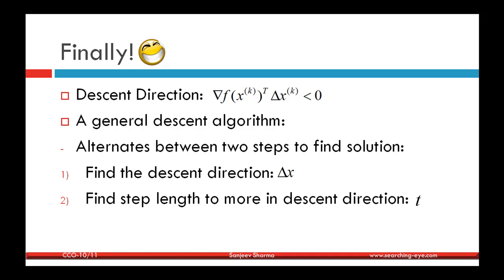This covers how to choose a descent direction. Now let's analyze the general descent algorithm. A descent algorithm is an iterative algorithm that alternates between two steps to find a solution. At each iteration it performs: first, finding a descent direction Δx; and second, deciding the step length to move in that direction. Then it updates the optimization variable.